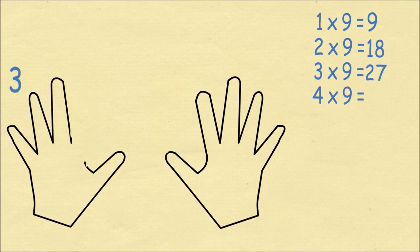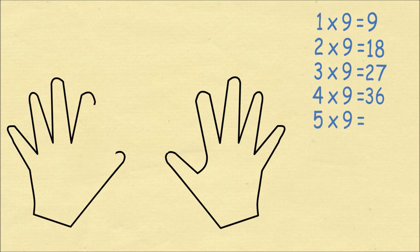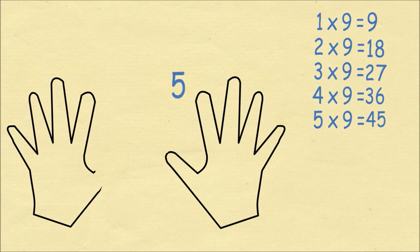Four times nine we'll have three on the left, six on the right to make thirty six. Five times nine we'll have four and five to make forty-five.